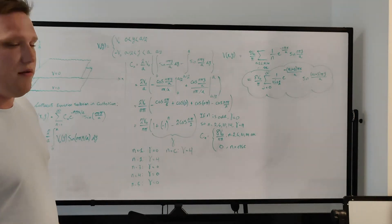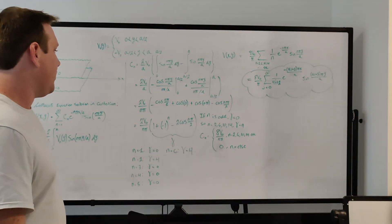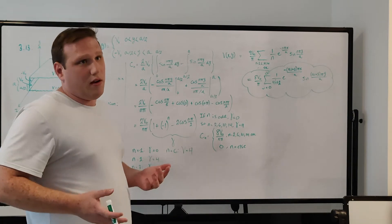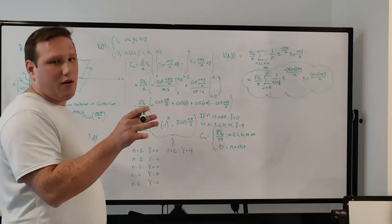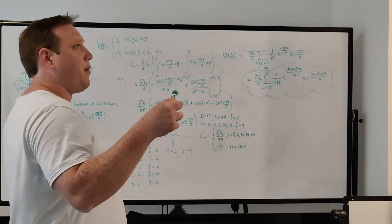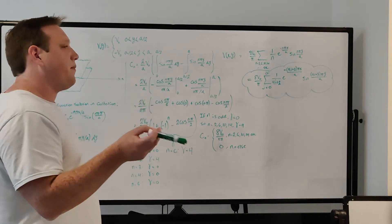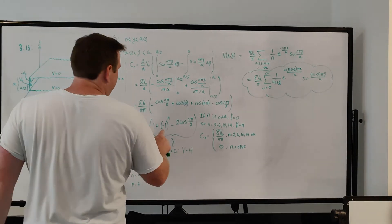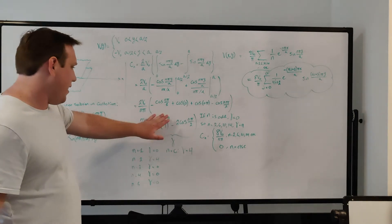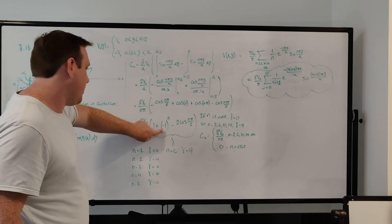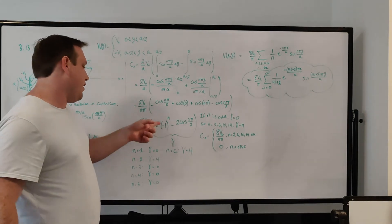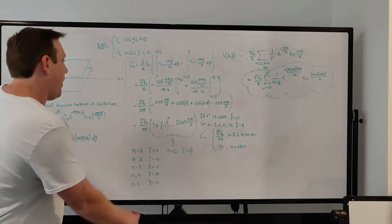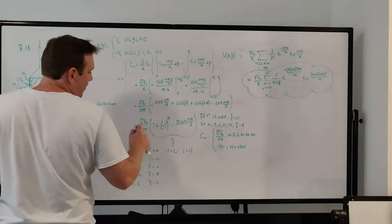Cosine of n pi depends on what the value of n is — and n is just an integer. If n is 1, you get cosine of pi which is negative 1. If n is 2, you get cosine of 2 pi which is 1. If n is 3, you get cosine of 3 pi which is negative 1. So it just keeps alternating between 1 and negative 1 depending on what n is. You can express that as negative 1 to the nth power. That works because if n is 0 you get 1, if n is 1 you get negative 1, if n is 2 you get negative 1 squared which is 1, and so on. That's just a convenient way to express cosine of n pi as negative 1 to the nth power. And then we combine those two terms as minus 2 cosine of n pi over 2.